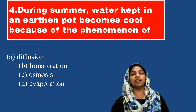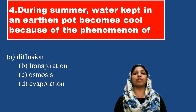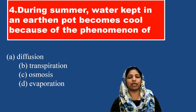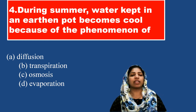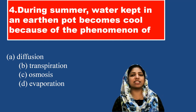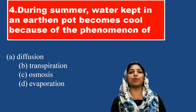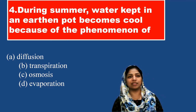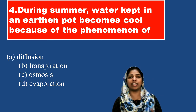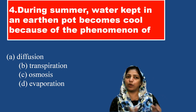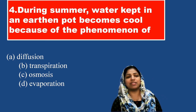In summer, it is used as cotton cloth. When we use sweat and evaporation, we have a cooling effect. One of the other things is the earthen pot.